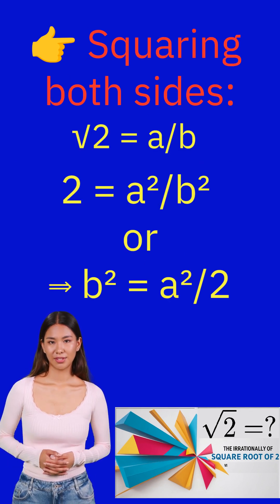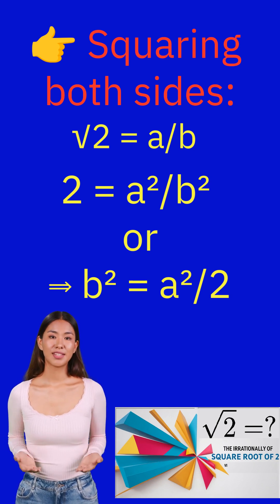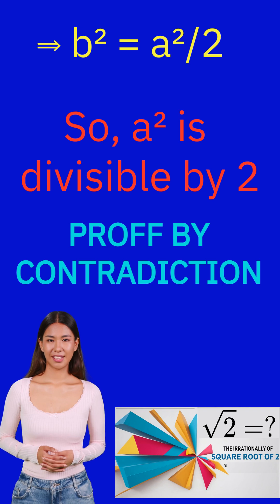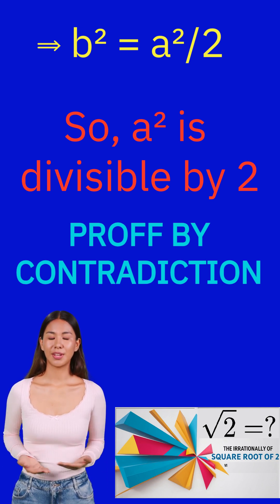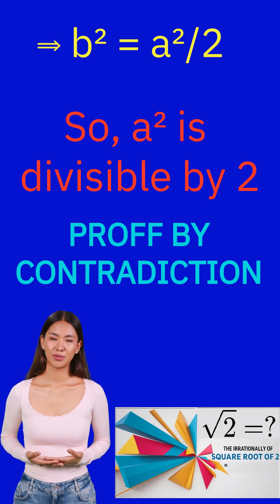Let us square both sides. On squaring, we get b² = a²/2. We can see that a² is divisible by 2, so as per proof by contradiction theorem, a is also divisible by 2.